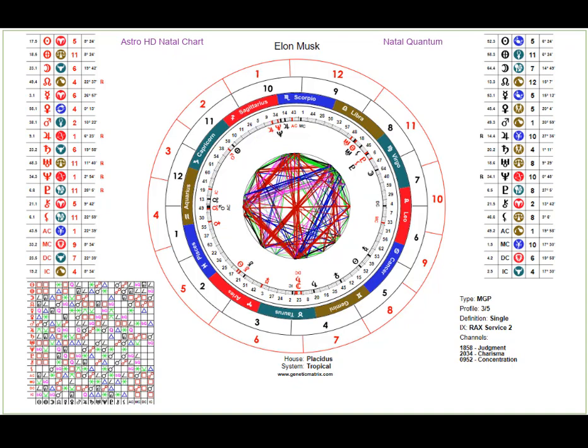Inside the gates and lines are the planets and their positions relative to the signs of the zodiac, which yields which human design gate and line is activated. For example, next to the sun you'll see 52.3 — the third line of the 52nd gate activated by the sun. This is a Cancer sun for Elon Musk, and next to that is the fifth house. The far right column shows the exact position in degrees and minutes.